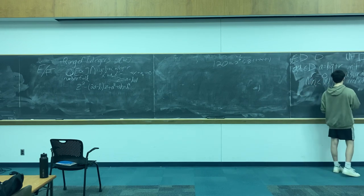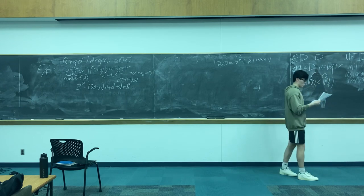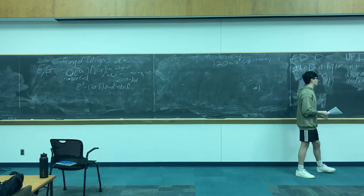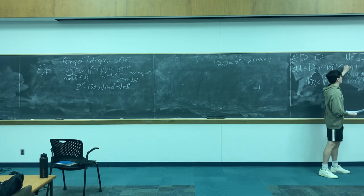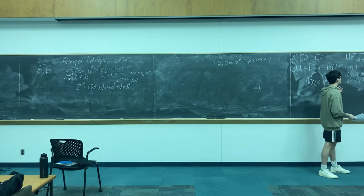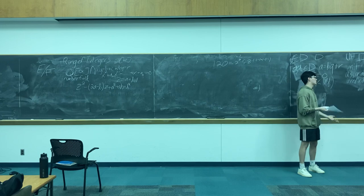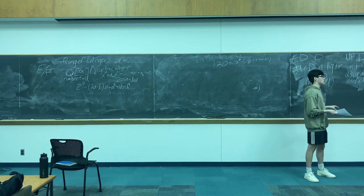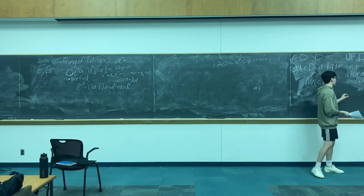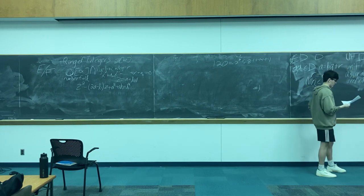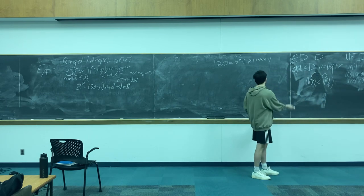Formally, a UFD is just an integral domain where every non-zero, non-unit element can be factored uniquely as a product of irreducible primes, up to multiplication by units. Basically, you can write it as a product of irreducible primes, but multiplying by 1 or negative 1 (or their analogs) doesn't count as a different factorization. Sometimes the definition is stated as 'up to associates and order,' but that means the same thing — you can write it as irreducibles, but multiplying by units doesn't change anything. That's a unique factorization domain, and a UFD is an integral domain.